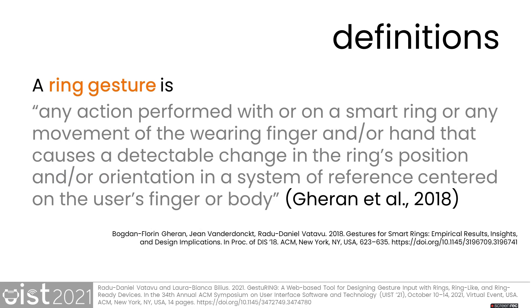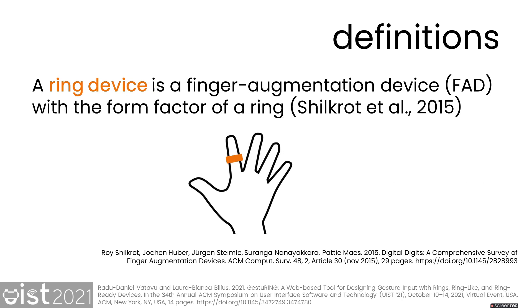In this paper, we employ an operational definition of a ring gesture as any action that can be performed with or on a smart ring, or any movement of a body part that can be detected by the ring. This definition comes from a 2018 paper on user-defined gestures with smart rings. Based on this definition, a ring device can be seen as a finger augmentation device that has the form factor of a ring.